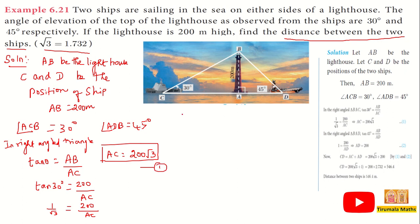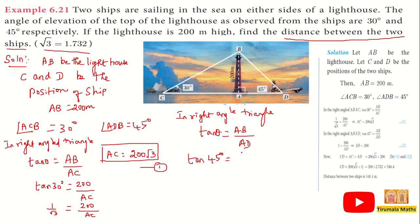Now for 45 degrees — in right-angle triangle, tan 45° = AB / AD. Since tan 45° = 1, we get 1 = 200 / AD, therefore AD = 200 meters.